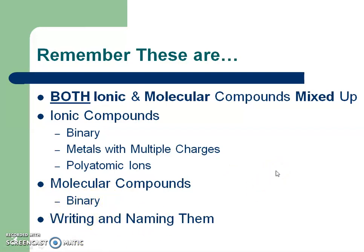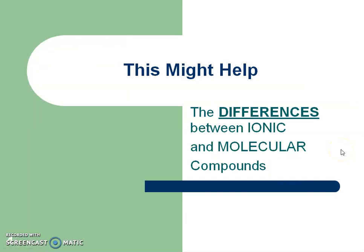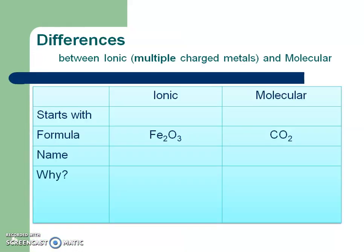You're going to do half writing and half naming. This might help you understand the difference between an ionic and a molecular compound. In your notes packet there's a chart like this — wait until I'm done filling in the whole chart. When we have an ionic compound, it's always going to start with a metal. If it starts with a metal, we name it the ionic way. If it starts with a non-metal, we name it the molecular way.